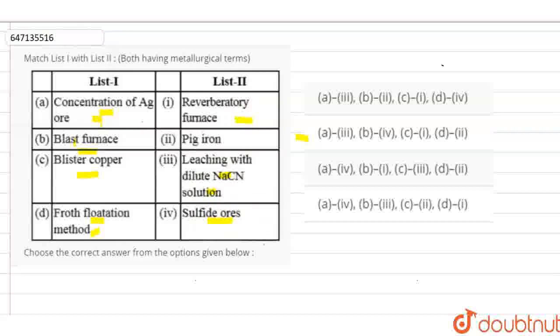So, one by one, let's see. First, is the Concentration of Ag ore. And the Concentration of Ag ore, which is best match, is Leaching with Dilute NaCN Solution.